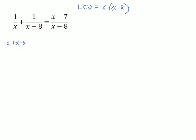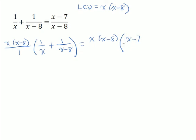And again, if it helps you to remember it, you might want to put that all over 1. We're going to have to multiply all that by 1 over x. We're going to have to multiply all that by 1 over x minus 8. And we're going to have to multiply all of that by x minus 7 over x minus 8.